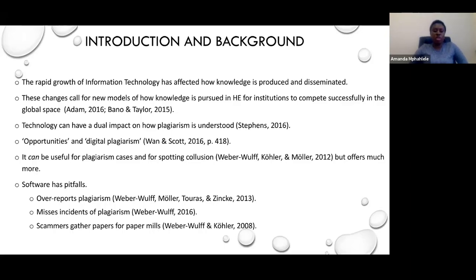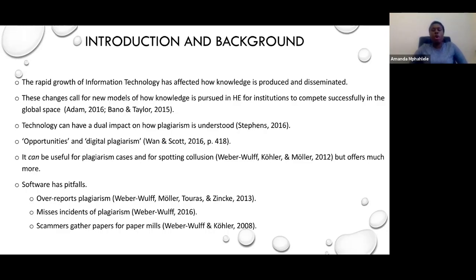There are some pitfalls associated with text-matching technologies such as Turnitin. Some of the pitfalls are that they present false positives — in other words, they over-report plagiarism. This has been tested by authors such as Weber-Wolf, who compared quite a number of text-matching softwares. Not only that, but sometimes they miss incidences of plagiarism — they present false negatives — more so because these technologies only match text that is digitalized, so other text that is not digitalized cannot be accessed.